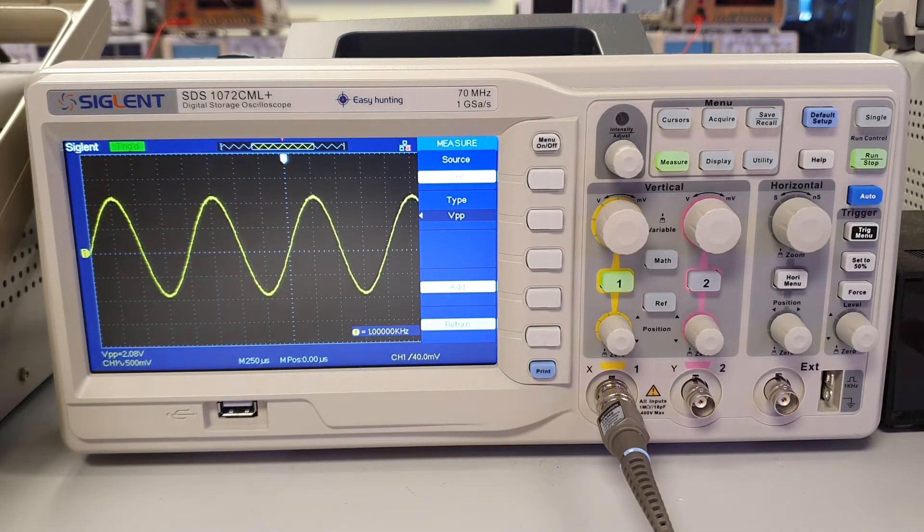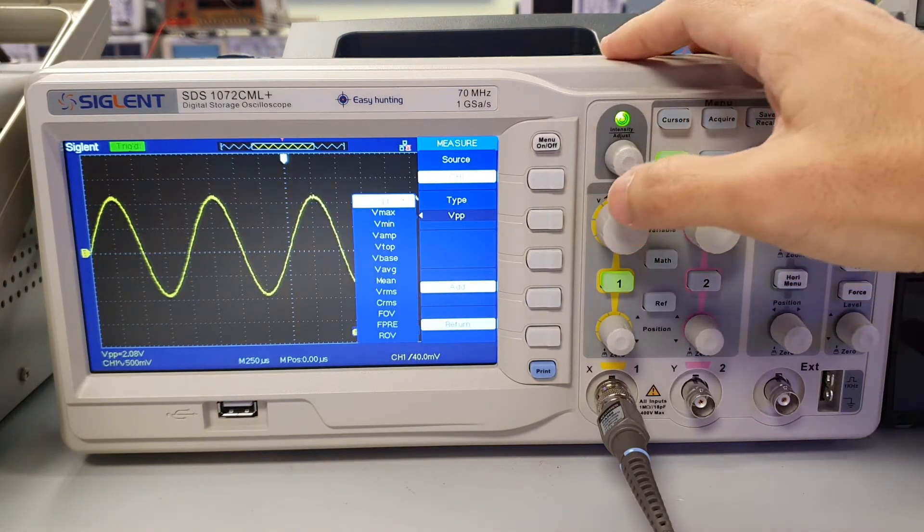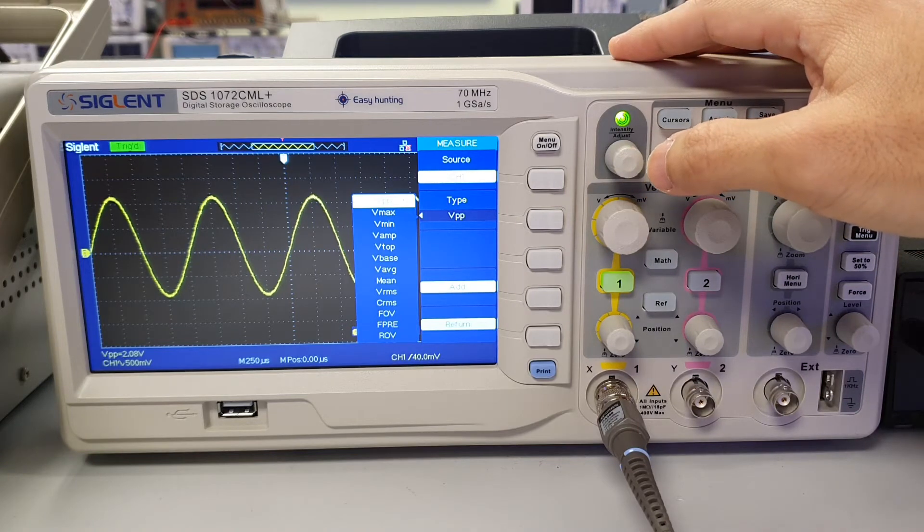To display the peak voltage of the waveform, press the button beside type again and select VMAX.